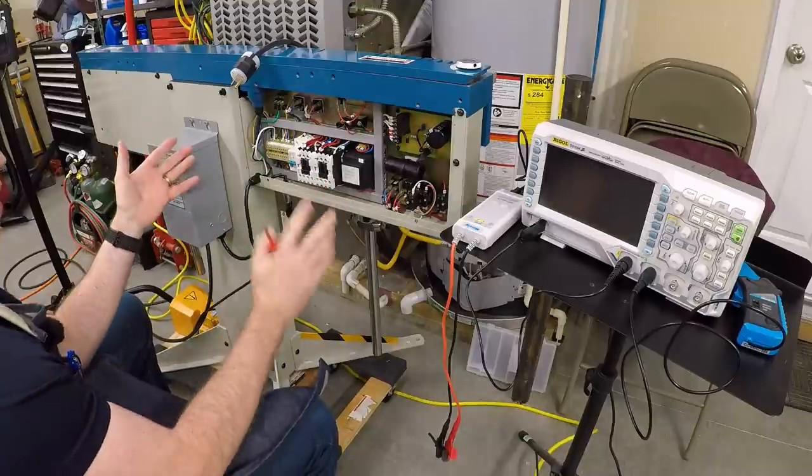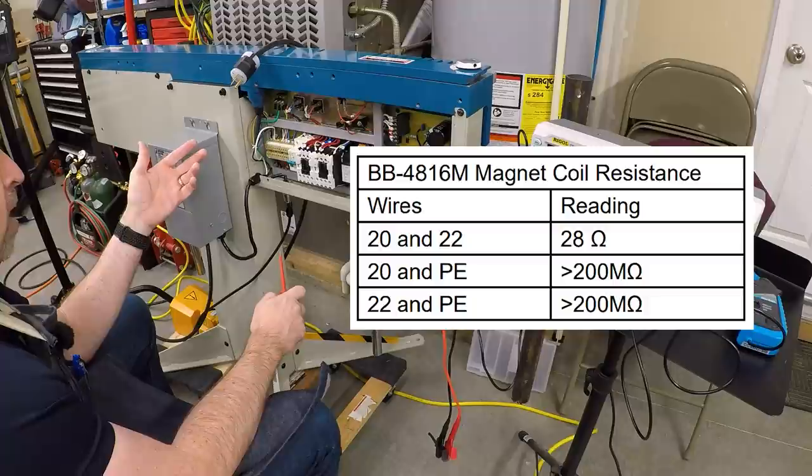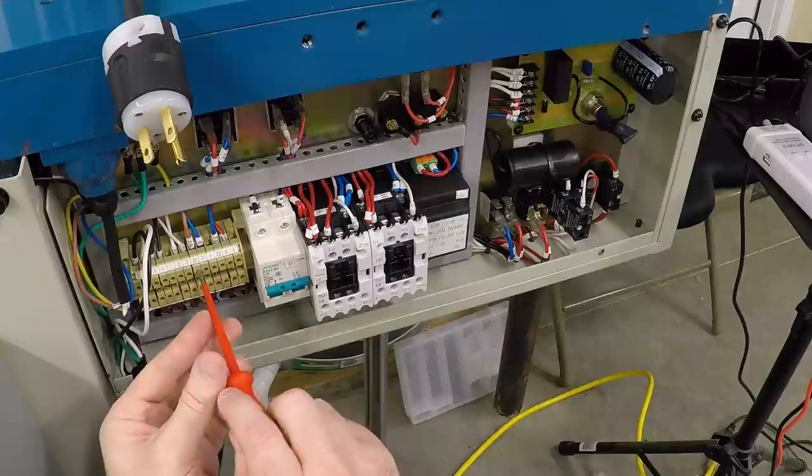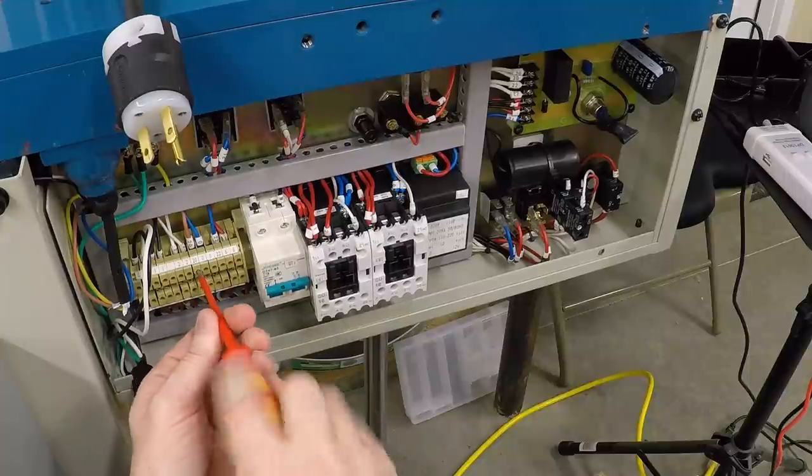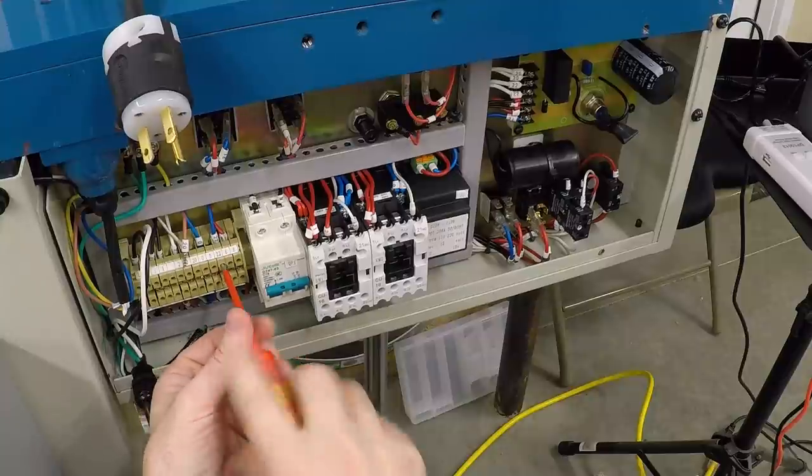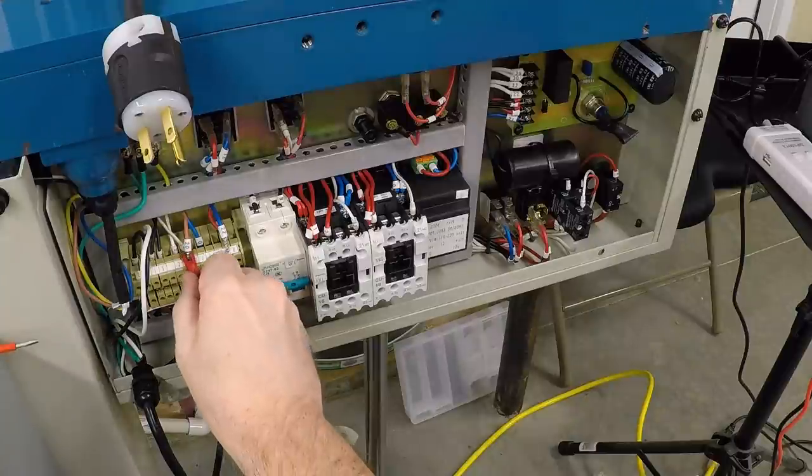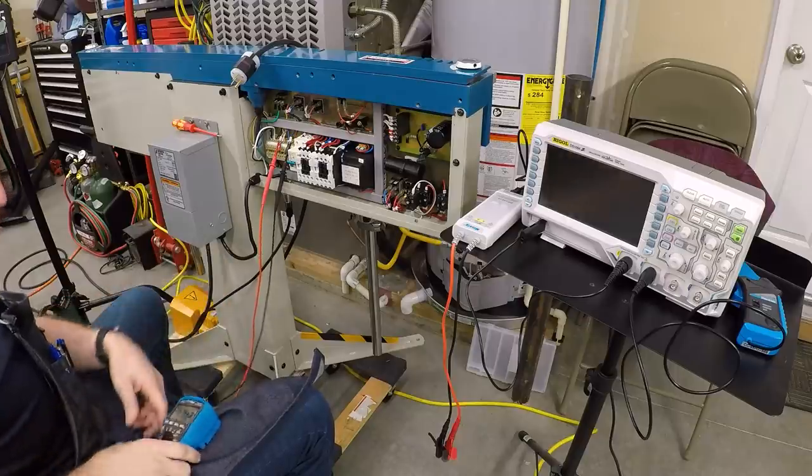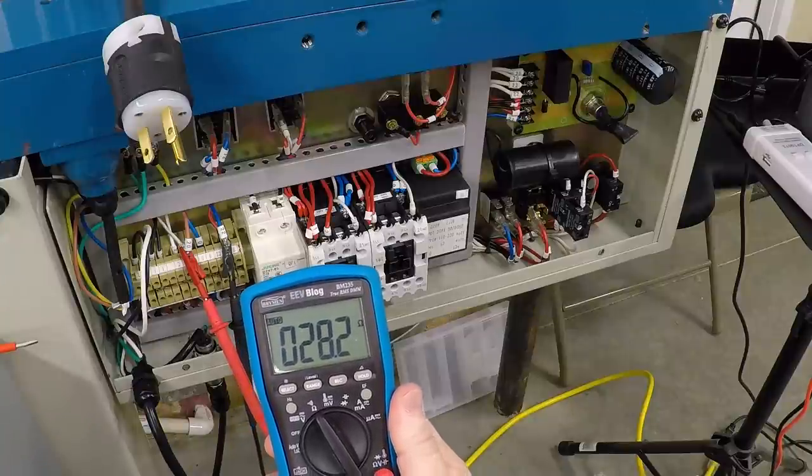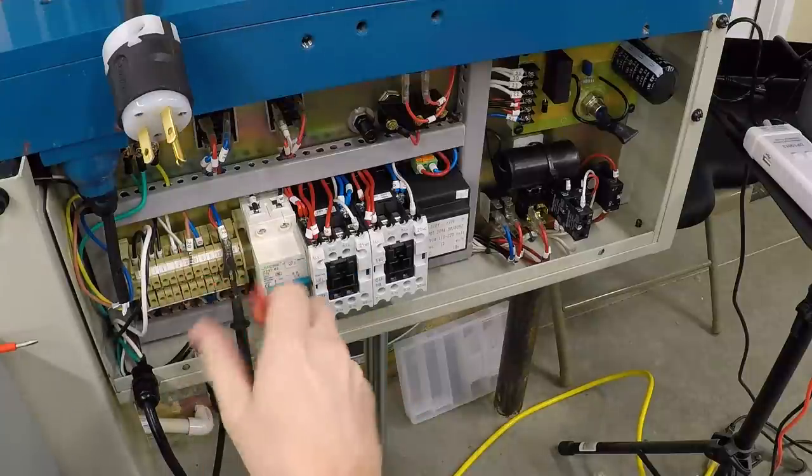The first and most obvious thing to check is the magnet resistance. The manual says the magnet should be 28 ohms. So let me pull the wires out here and do a quick check. It looks like we've got 28.2 ohms, which is exactly on spec. So it's definitely not a problem with the magnet.